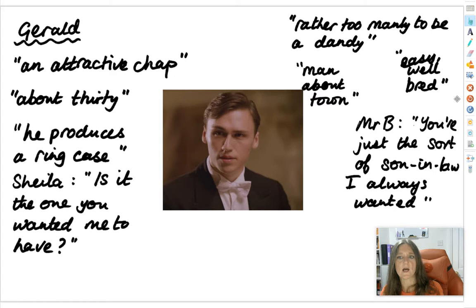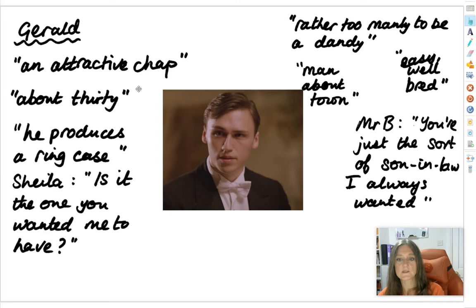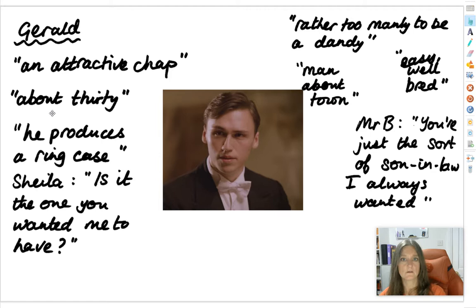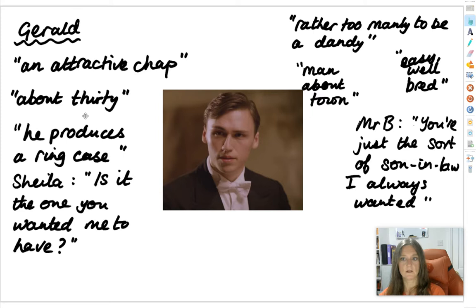He is about 30. So in our production the actor playing Gerald is probably about 10 years too young — you'd need someone a little older. The real Gerald should be about 30. What's significant about that age is he's bridging the two generations: Sheila is probably eight or nine years younger than him, and Mr Birling is about 20 years older. Gerald sits in between those two generations. He also has some experience of life and is described as a man about town.